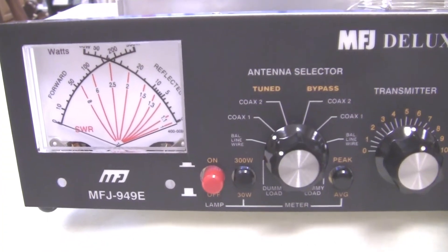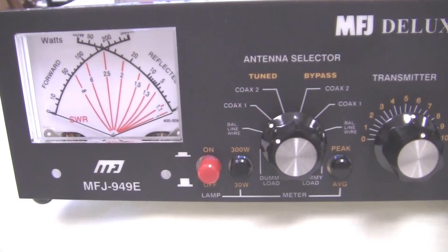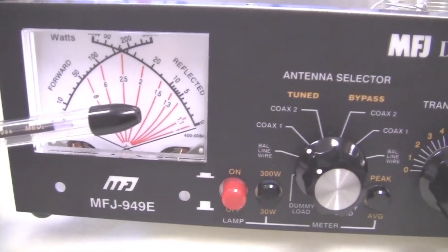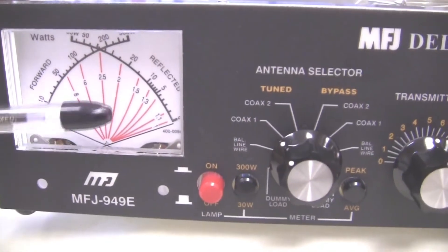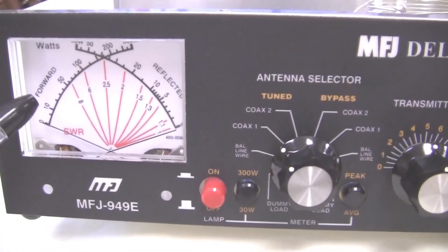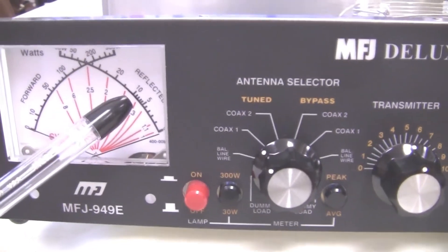Let's take a look at the front panel controls on this MFJ949E. Over here to the left is the SWR meter, which is a dual meter showing reflective power and forward power. Ideally, when it's tuned, you'd have all forward power and no reflective power.